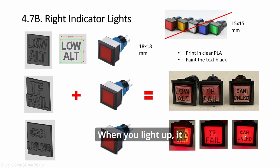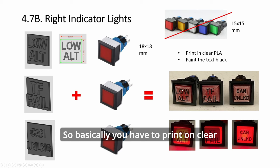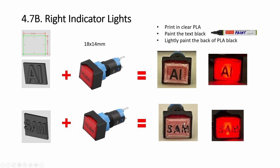When you light it up, it will look like this. Basically, you have to print on clear PLA, and then the protruding text you just draw with a black marker. Same thing with this one here.